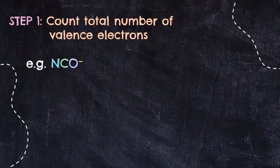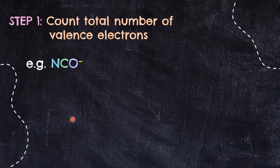We'll use the periodic table to figure out how many valence electrons each element has. Let's try one example involving the ion NCO⁻. Carbon, nitrogen, and oxygen are all located on the same period, which is period 2, but different groups: group 14, 15, and 16 respectively.